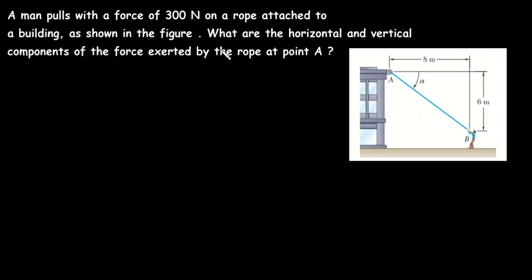Hello everyone, you are welcome to this lesson. In this video you are going to solve this question. The question says: a man pulls with a force of 300 newtons on a rope attached to a building, as shown in the figure. What are the horizontal and vertical components of the force exerted by the rope at point A?